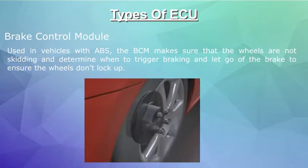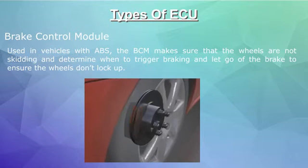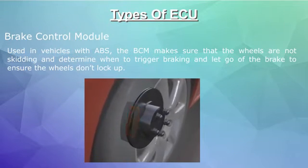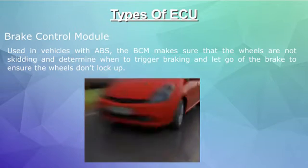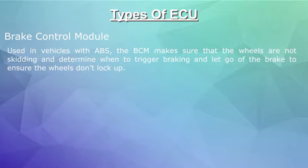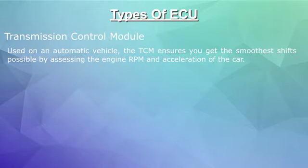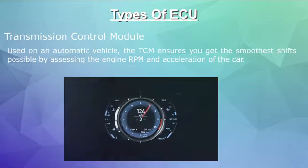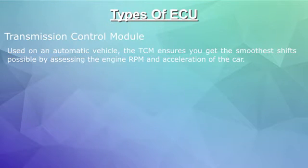Brake control module: used in vehicles with ABS, the BCM makes sure that the wheels are not skidding and determines when to trigger braking and let go of the brake to ensure the wheels don't lock up. Transmission control module: used on an automatic vehicle, the TCM ensures the smoothest shifts possible by assessing the engine RPM and acceleration of the car.